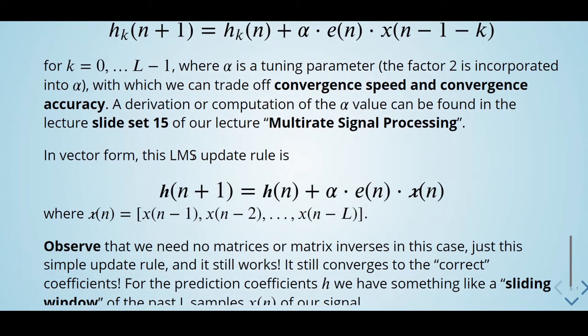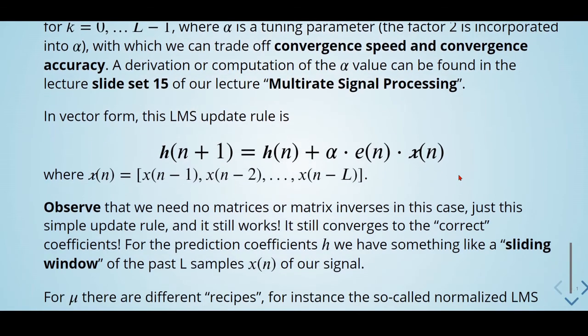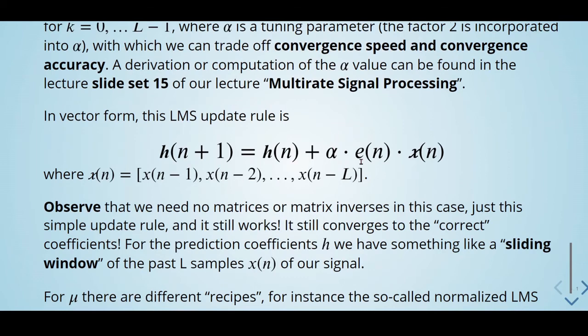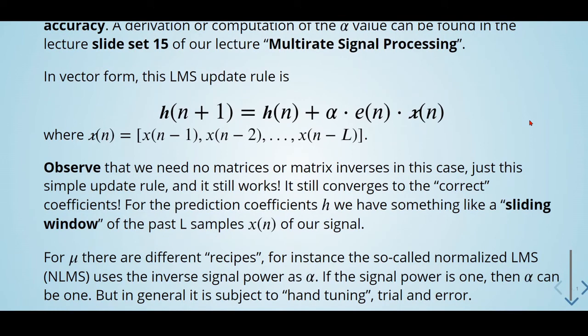So in vector form, this LMS update rule is given by this, where we have coefficients alpha, error, and original signal. This will update h(n). Observe that we need no matrices or matrix inverses in this case, just the simple update rule, and it still works. It still converges to the correct coefficients.